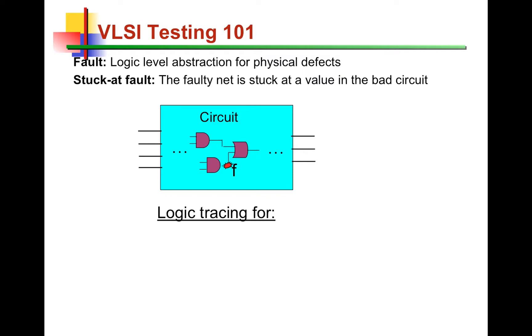In testing, faults refer to logic level abstraction of physical defects. Physical defects can be in any form, and the underlying reason could be anything, from dust particles on masks, or alignment issues, or bridges, but faults are simple abstraction of these defects. We simply define them at a logical level. For instance, a stuck-at fault represents a net that is stuck at a certain value, 0 or 1, regardless of what inputs that net receives.